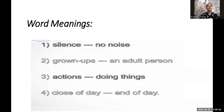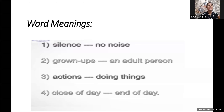Now let us see the hard words from the poem. The first word is 'silence' — there should not be noise, you should be silent. When the teacher is explaining, she expects complete, pin-drop silence. 'Grown-ups' — as I told you, the adult person: mother, father, parents, grandparents are the grown-ups. 'Actions' means what we do — the verbs or actions we perform, such as dancing, playing, running, crying. 'Close of day' means end of the day — the night, where you have to take rest, go to sleep, give your body full rest. That is called close of day, end of day.